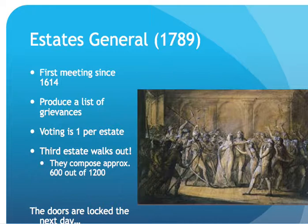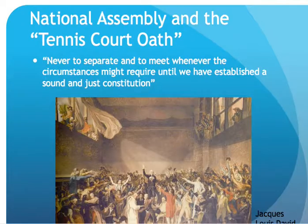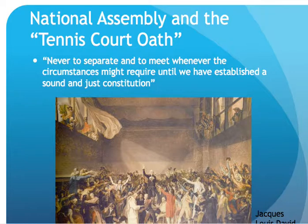The third estate wanted a tax on the first and second estate, but the way the Estates General worked, each estate got one vote, so the first and second estate could vote together two-to-one against the third estate, meaning no changes were made. That leads the third estate to break off. They found the doors locked and met in a tennis court — actually a racquetball court — and made an oath to 'never separate and meet whenever circumstances might require until we've established a sound and just constitution.' You see the famous painting by Jacques-Louis David of the third estate gathering as the National Assembly for the first time, given some legitimacy by members of the first and second estate who joined them.